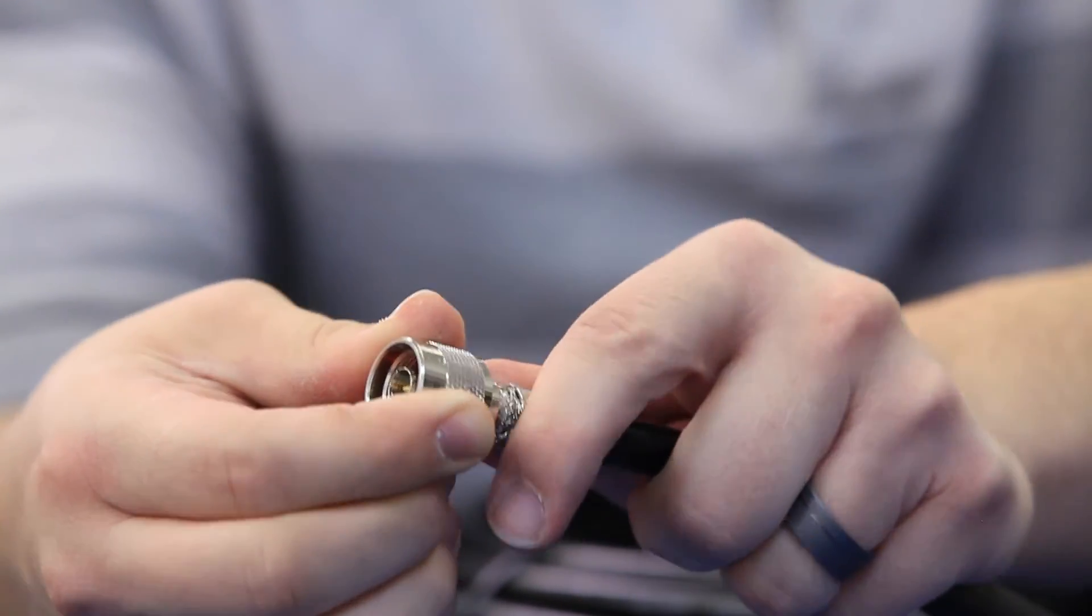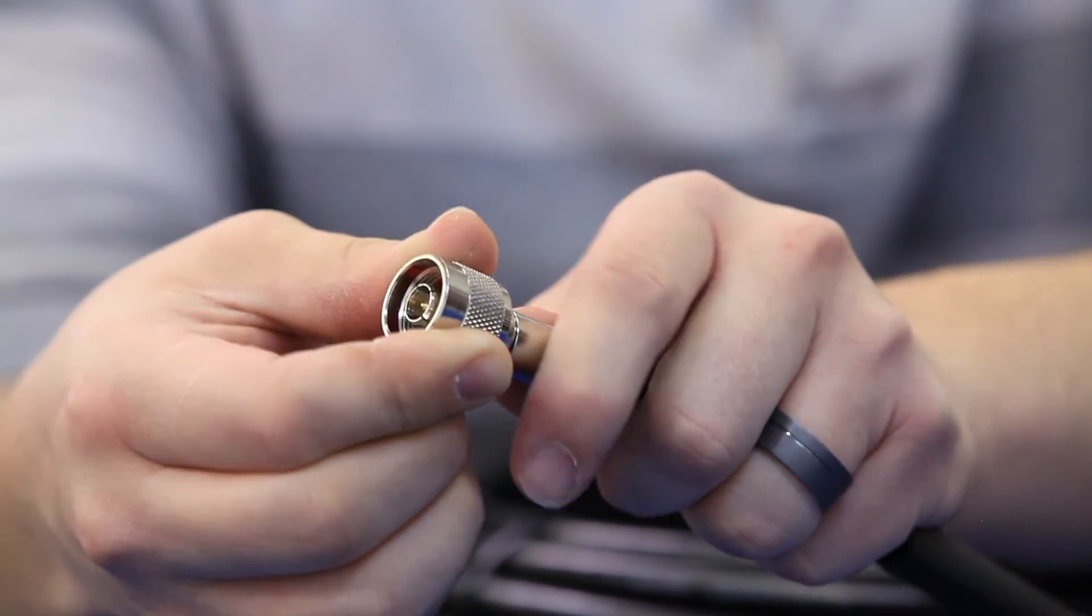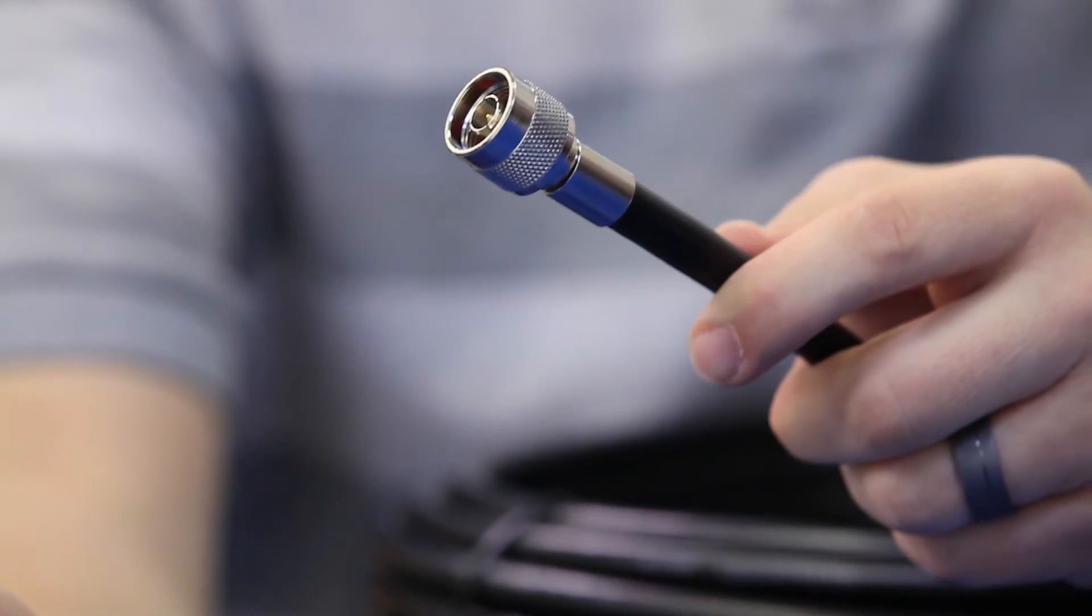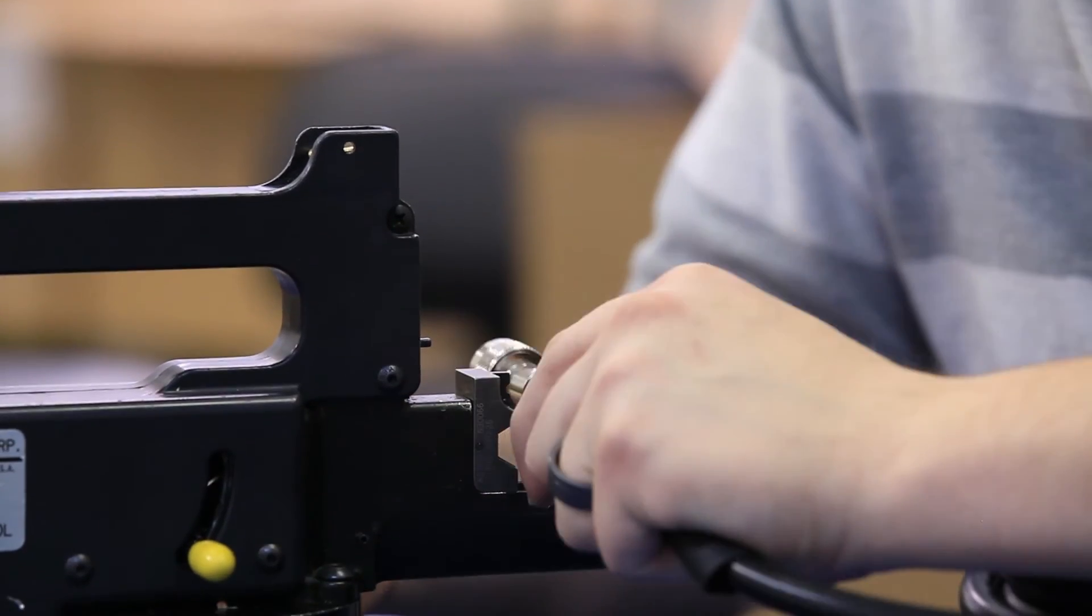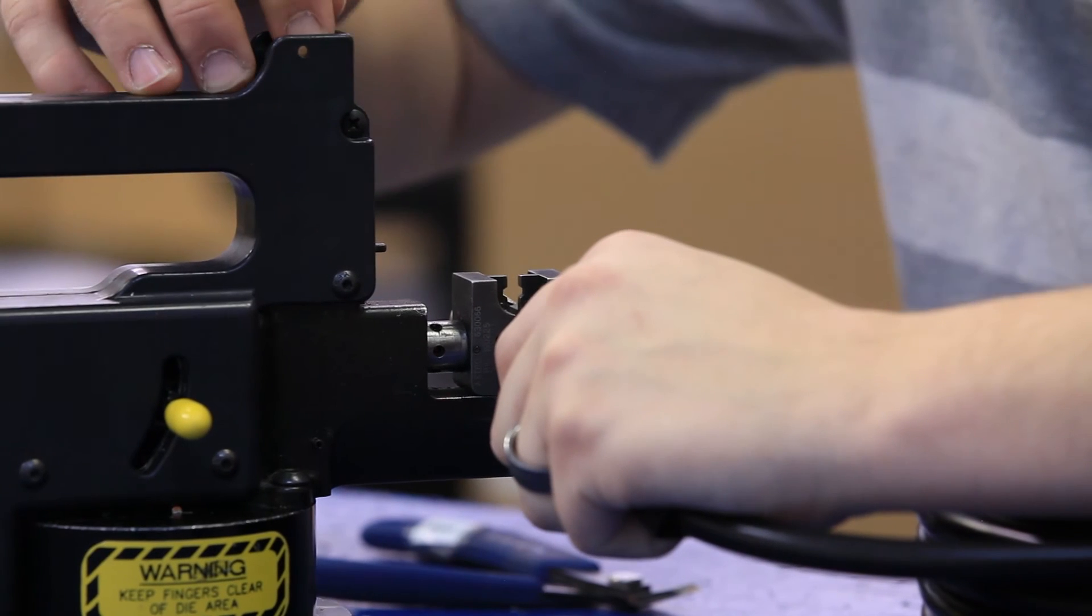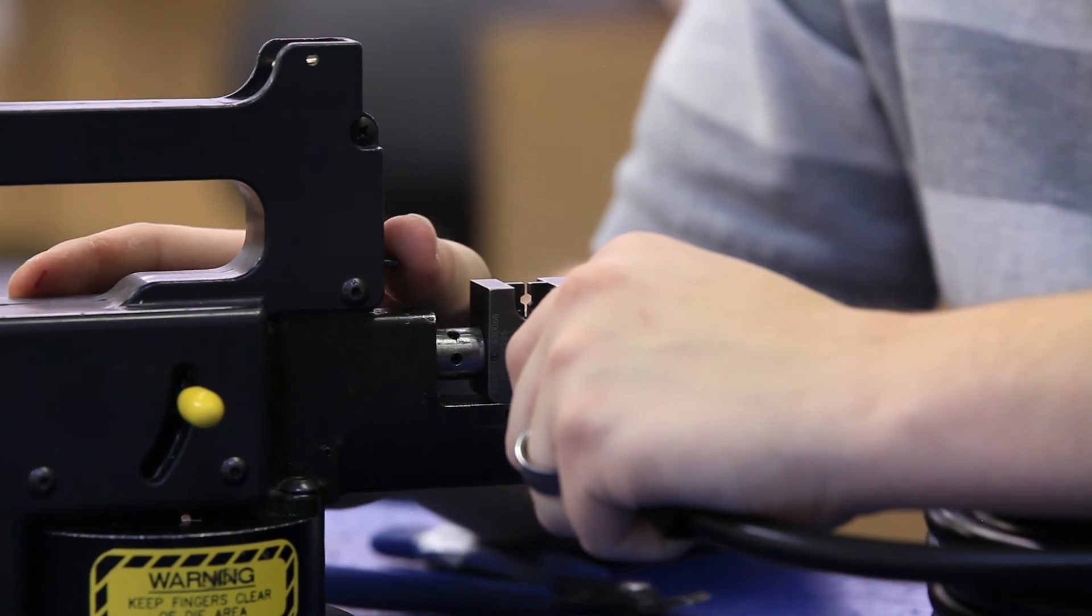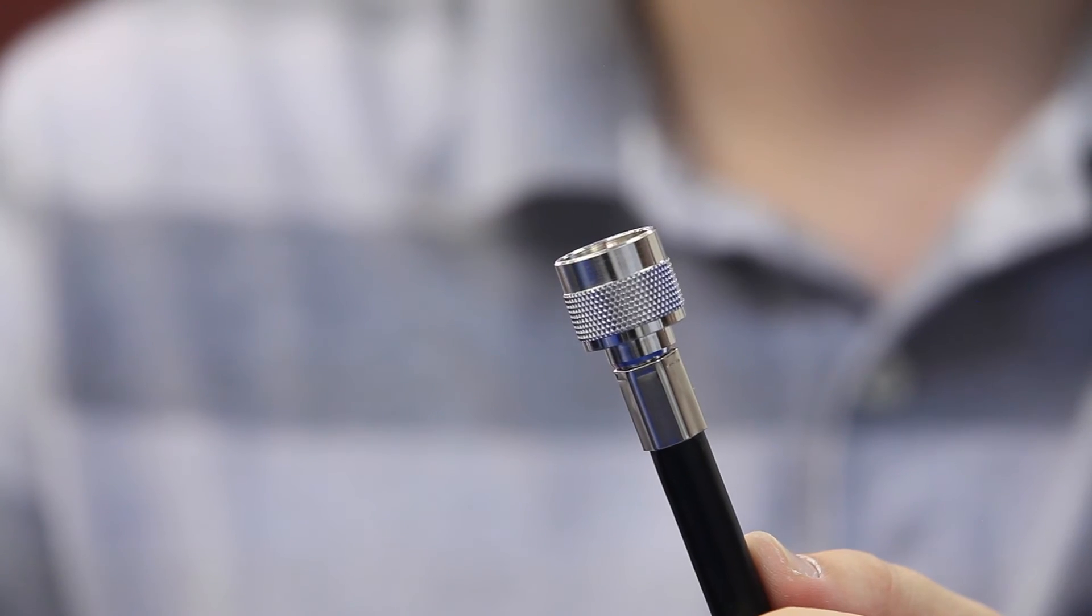Slide the crimp ring up and onto the connector. You'll notice that the crimp ring will push the braided shielding back around the connector. Place the connector and the cable into the crimping tool and crimp it firmly in place. We recommend you use a pneumatic crimping tool if possible for the strongest crimp.